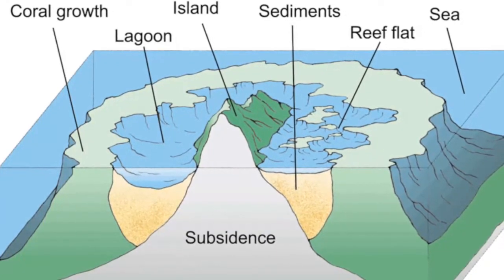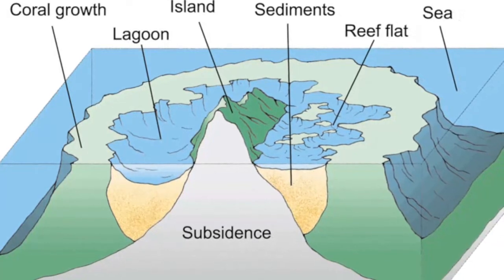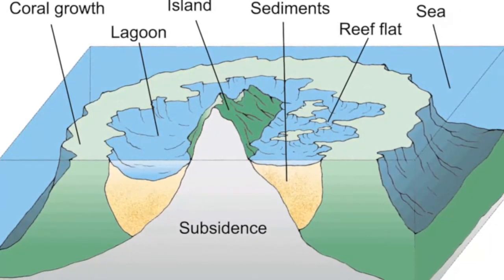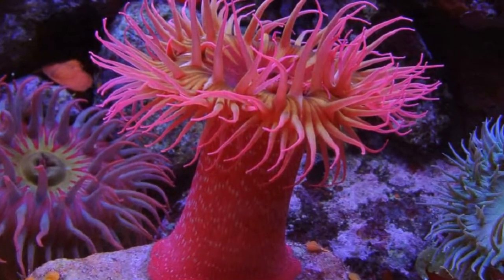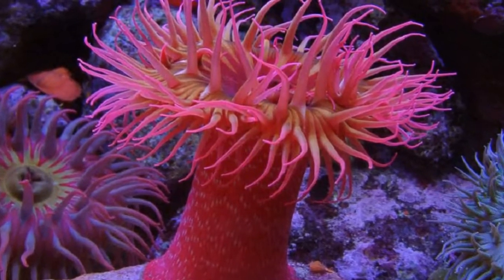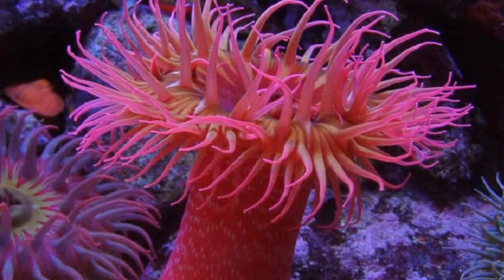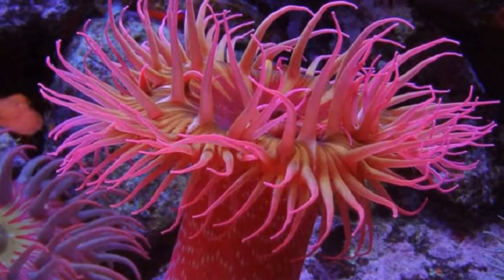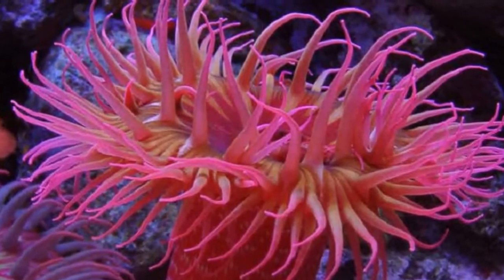Corals are colonial animals about the size of an ant that feed with stinging tentacles and are related to jellyfish. Most corals protect themselves by creating a hard, external skeleton made of calcium carbonate. Where corals reproduce and grow over many centuries, their skeletons fuse onto large structures called coral reefs.